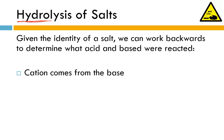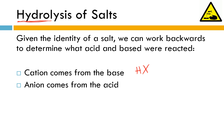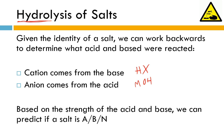We know that the cation is always going to come from the base. Our acids are always HX — X being some anion — so the cation from an acid is always a hydrogen ion. The anion is going to come from the base, which always has hydroxide. So the anion must come from the acid. Based on the strength of the acid and base used to produce that salt, we can determine if the salt is acidic, basic, or neutral.